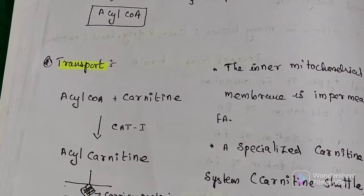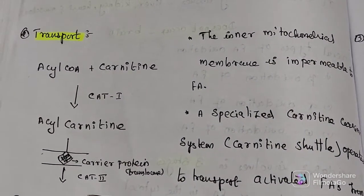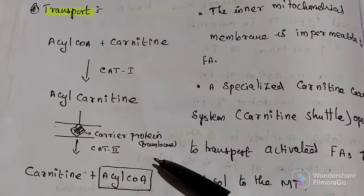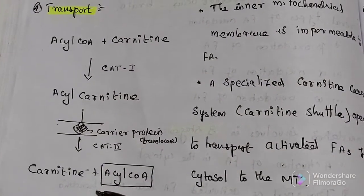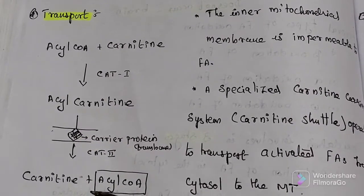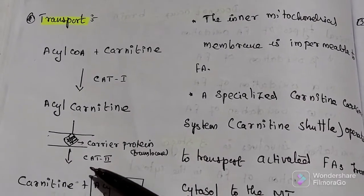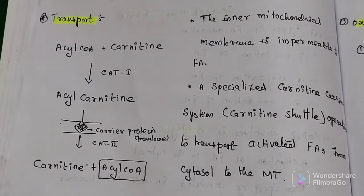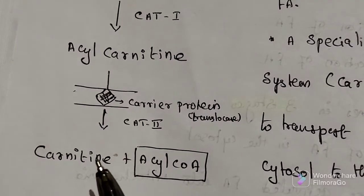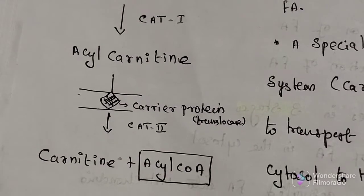The acyl-carnitine is transported through the inner mitochondrial membrane. Inside the mitochondria, it is converted back into carnitine plus acyl-CoA with the help of enzyme carnitine acyl-transferase-2. The carnitine is then released and returned to the cytosol for reuse.